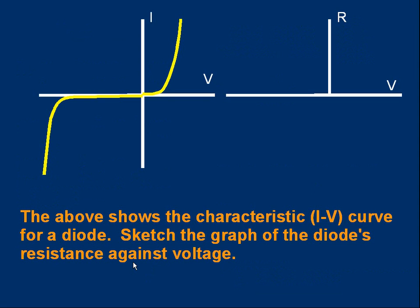Let's start with a basic non-calculation problem. On the top left we've got the characteristic curve of a diode, so the graph shows a characteristic or IV curve for a diode. Sketch the graph of the diode's resistance against voltage. That's the top right, the axes have been drawn. The resistance isn't constant, it varies. What's the graph of resistance versus voltage look like? Pause the video, think about it, try it for yourself.